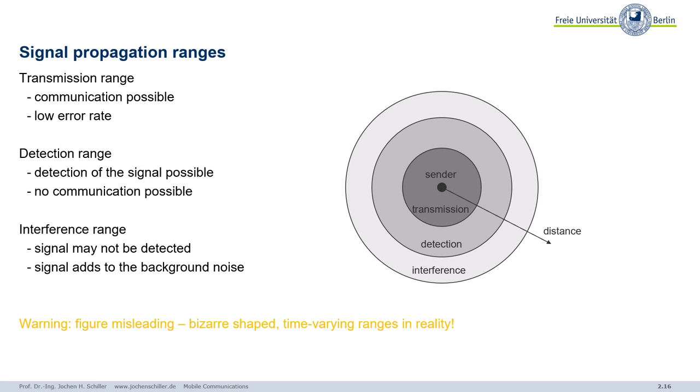We can distinguish three different ranges. First of all, we have a transmission range. Transmission range means the communication is possible. You have a relatively low error rate. So if you are here somewhere, then you can easily transmit and receive data. That's exactly what we need for wireless communication.